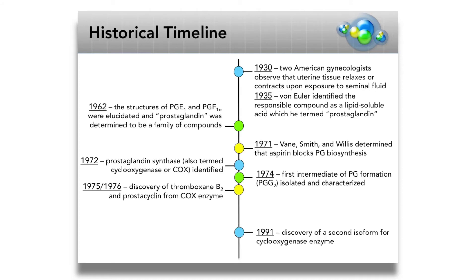Eicosanoids have been studied for over the past 80 years. It was first in 1930 that two American gynecologists observed that uterine tissue relaxes or contracts upon exposure to seminal fluid. A few years later, von Euler identified the responsible compound as a lipid-soluble acid. Because he thought this compound was coming from the prostate gland, he termed this molecule prostaglandin, but the structure was not yet known. In fact, it was nearly 30 years later before the structures of prostaglandin were elucidated, and at that point, these were determined to be not just one compound, but a family of compounds.